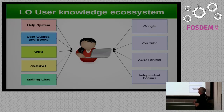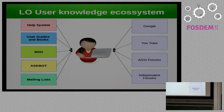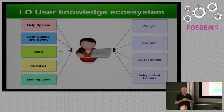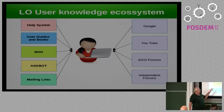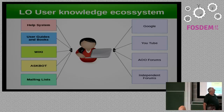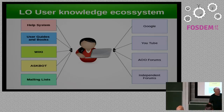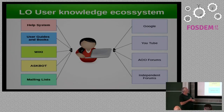What we have in the user knowledge ecosystem is the help system bundled in LibreOffice, user guides and books written and published by the community, a very extensive wiki for information gathering, an ask-bot question-and-answer website for end users, mailing lists, Google searches, YouTube videos, Apache OpenOffice forums and wikis, and independent forums like Reddit.